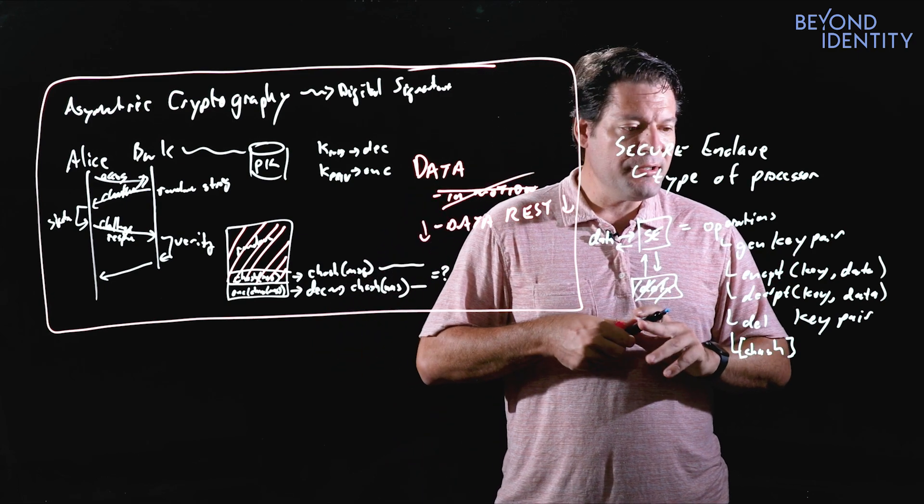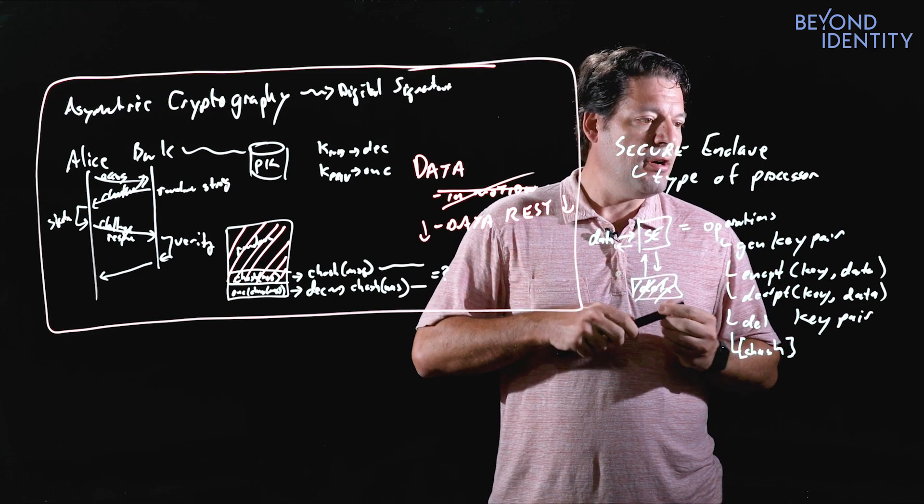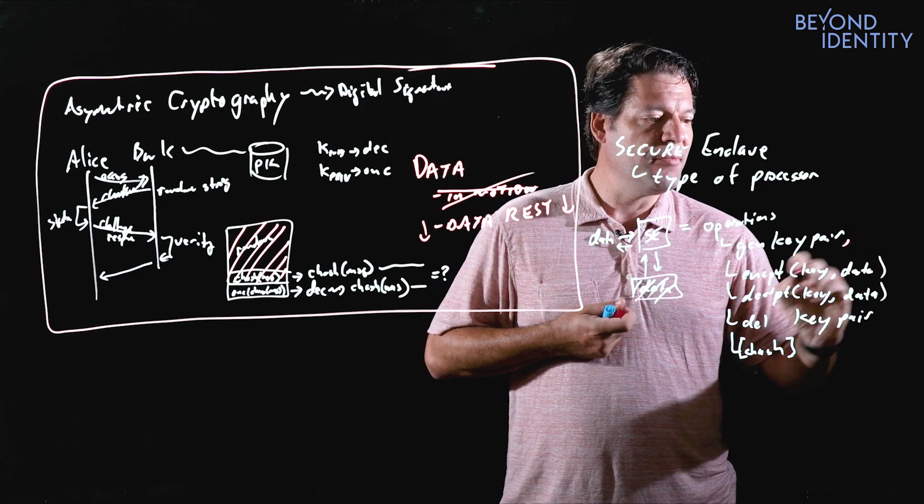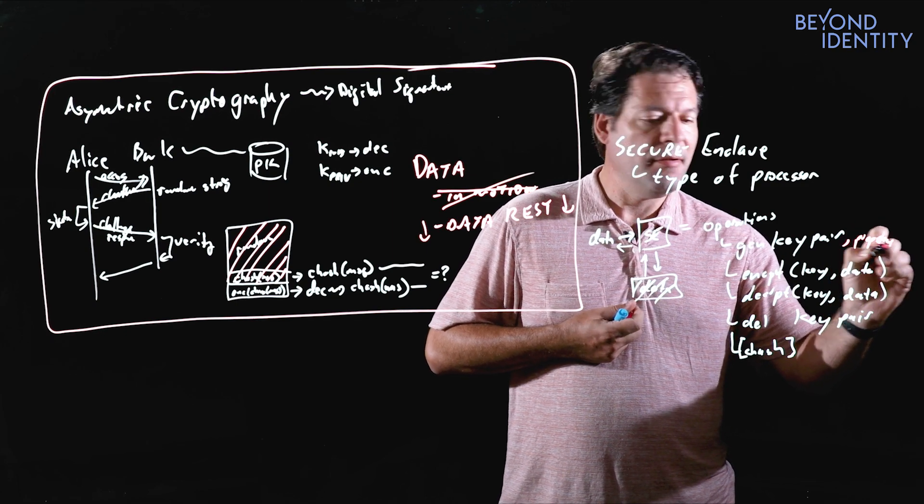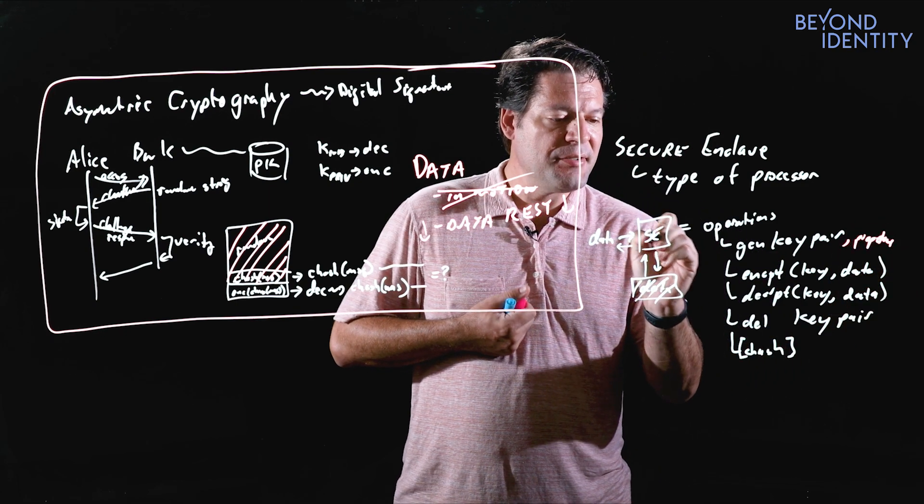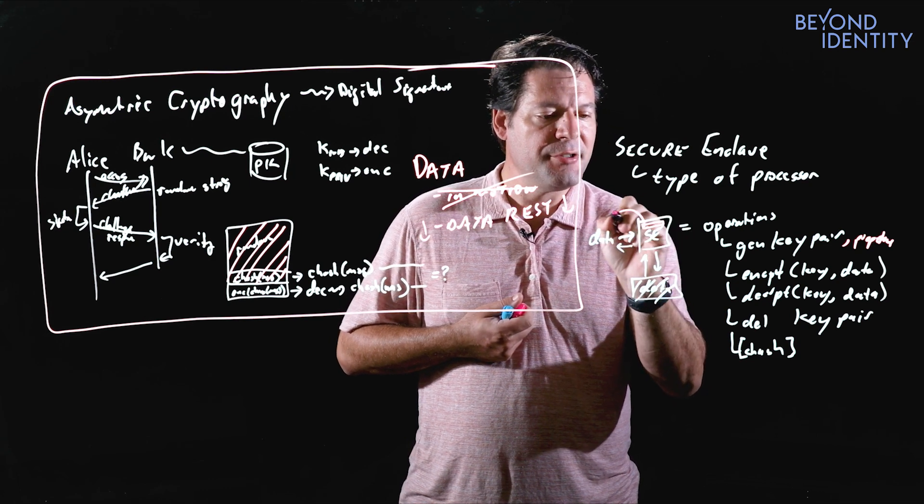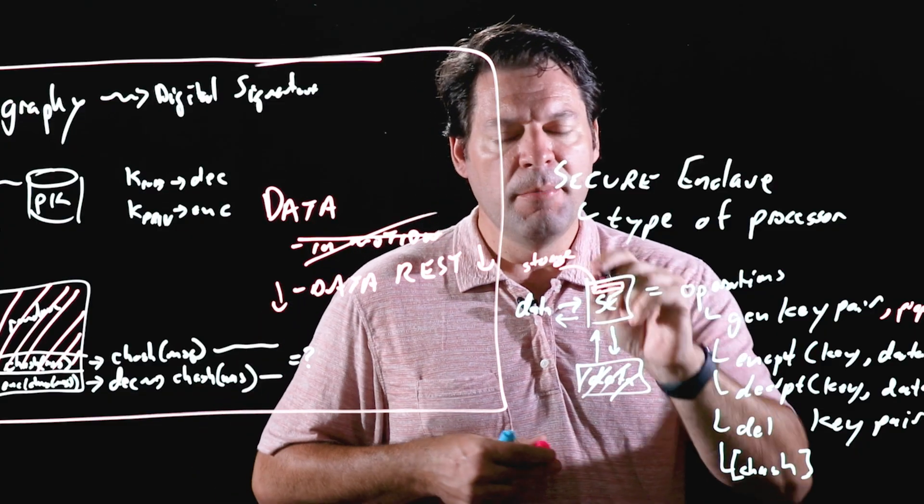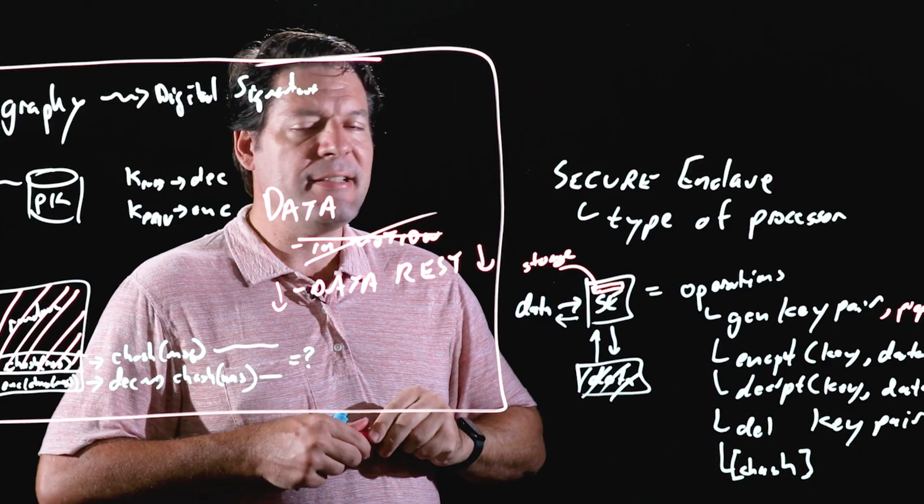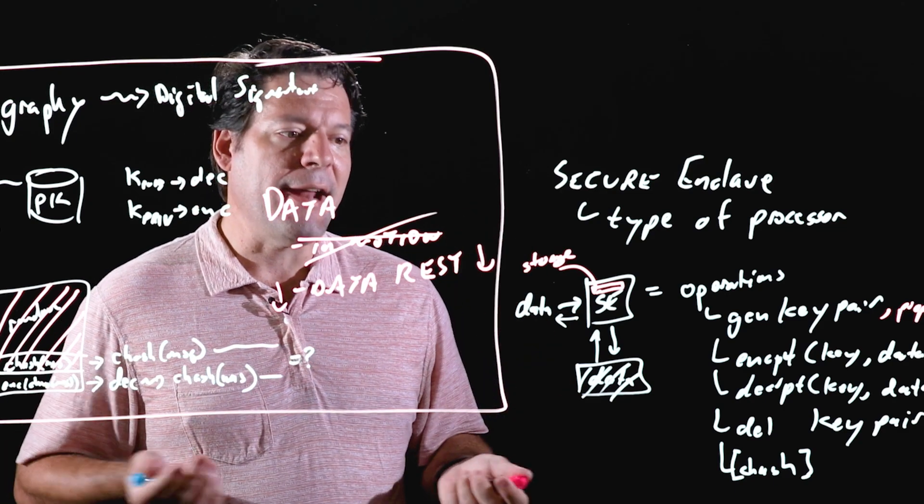So one other interesting property about these enclaves is when you create keys, you can also create these additional properties of the key. And essentially, when we said this was a processor, we left out a couple things. This processor has some storage. It's a small amount of storage, and it's called secure storage. And the idea is it's tamper resistant. So I can store things in that processor that no one can get at.